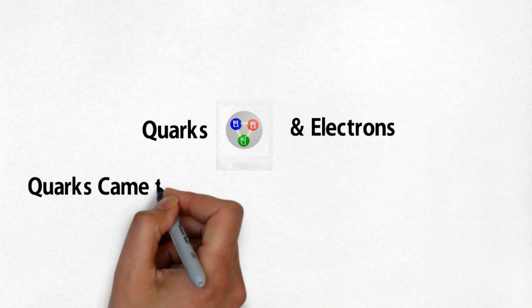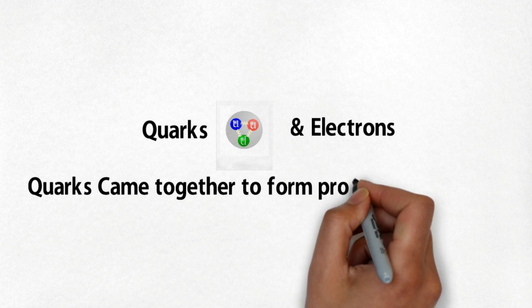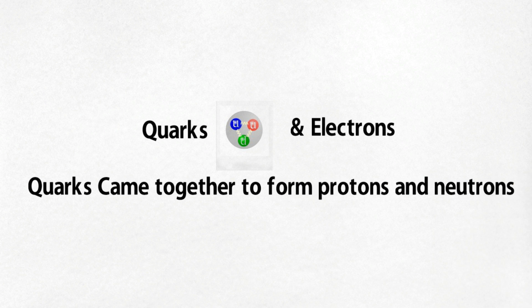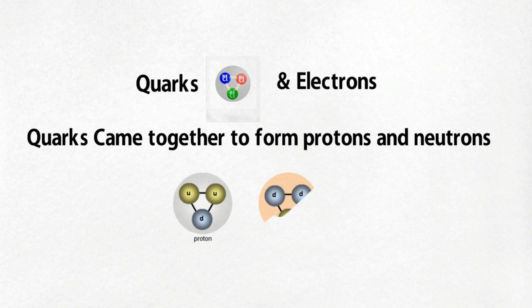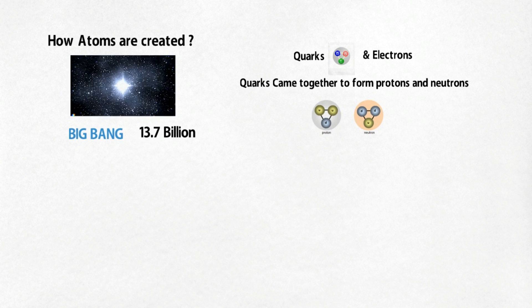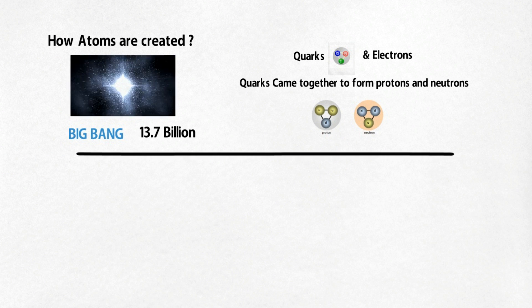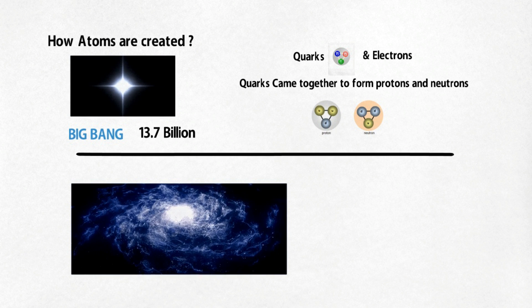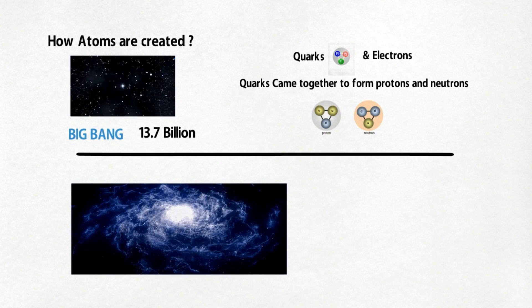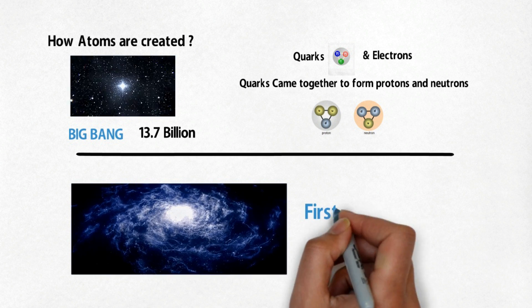Quarks came together to form protons and neutrons, and these particles combined into nuclei. This all took place within the first few minutes of the universe's existence.